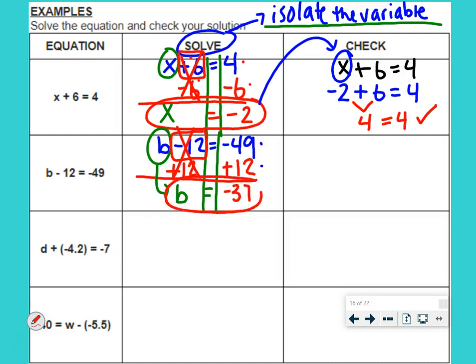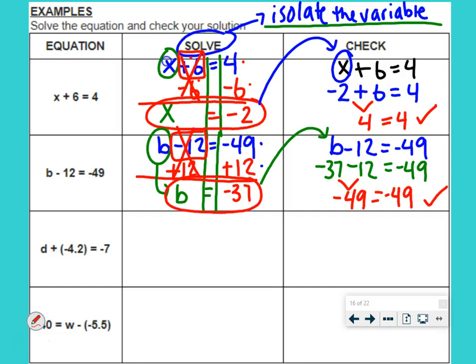You do have access to calculators, so if you are struggling with those operations, please use your calculator. Now, we just need to check it. Again, to check, we write down the original equation. Take our answer. Plug it in for that variable. We have negative 37 minus 12 equals negative 49. Negative 37 minus 12 means I spent $37. Then I went and I spent 12 more dollars, which means total I spent $49. Does negative 49 equal negative 49? Yes, it does.